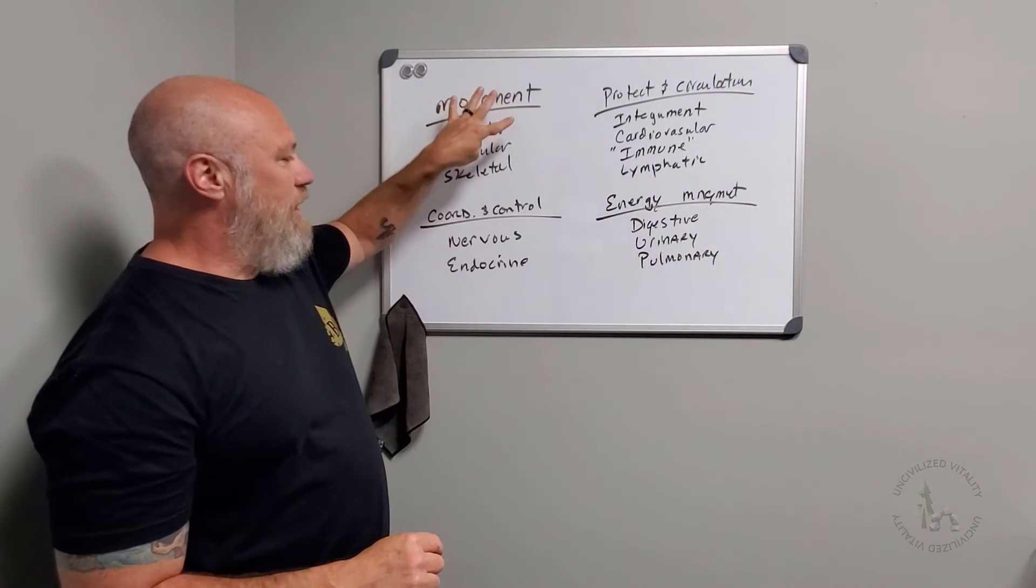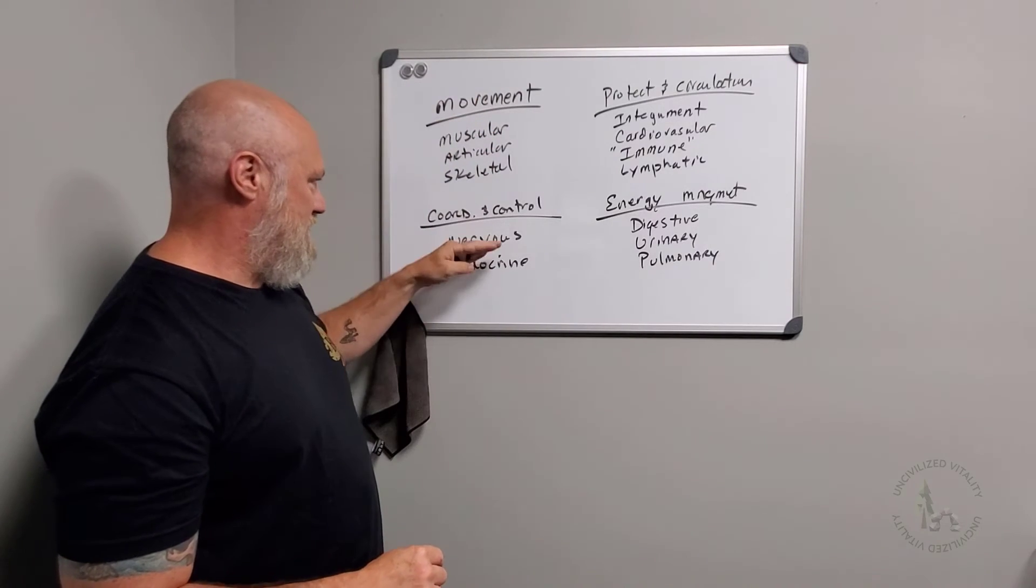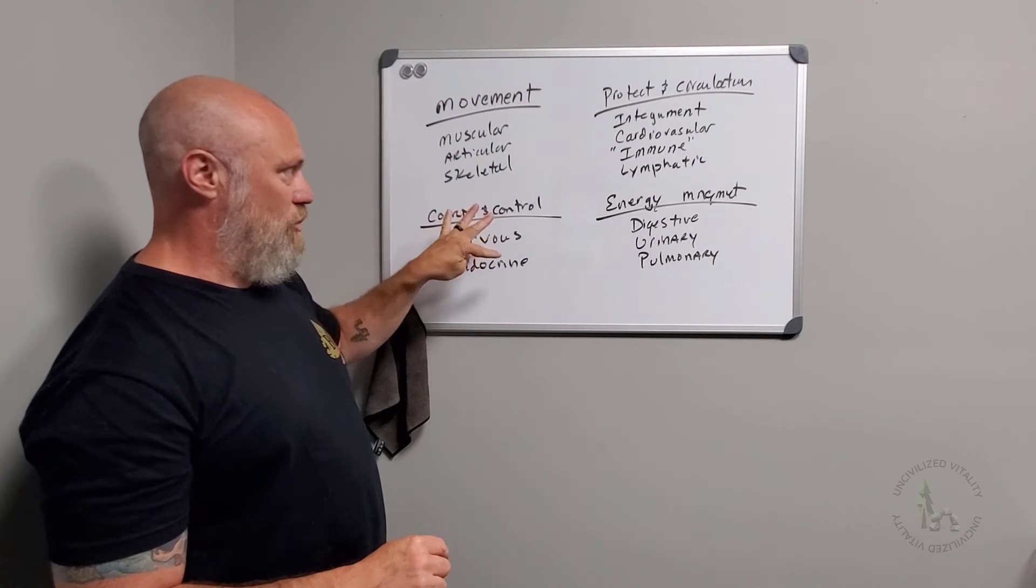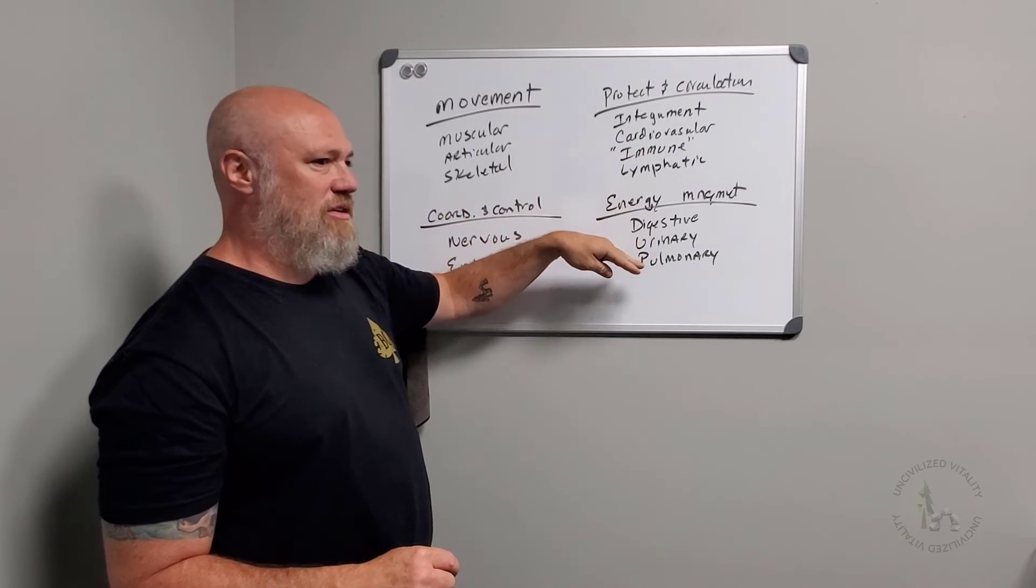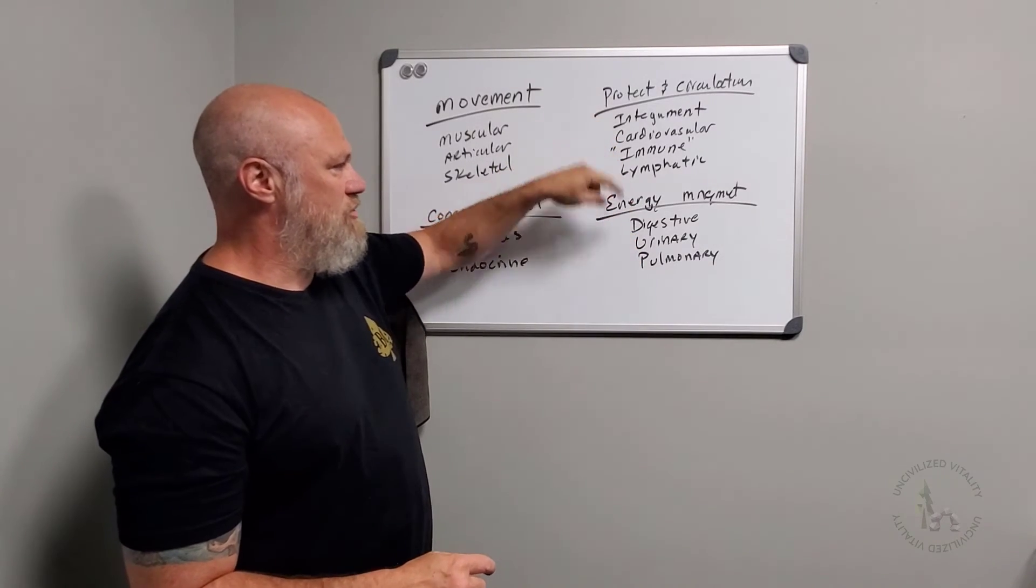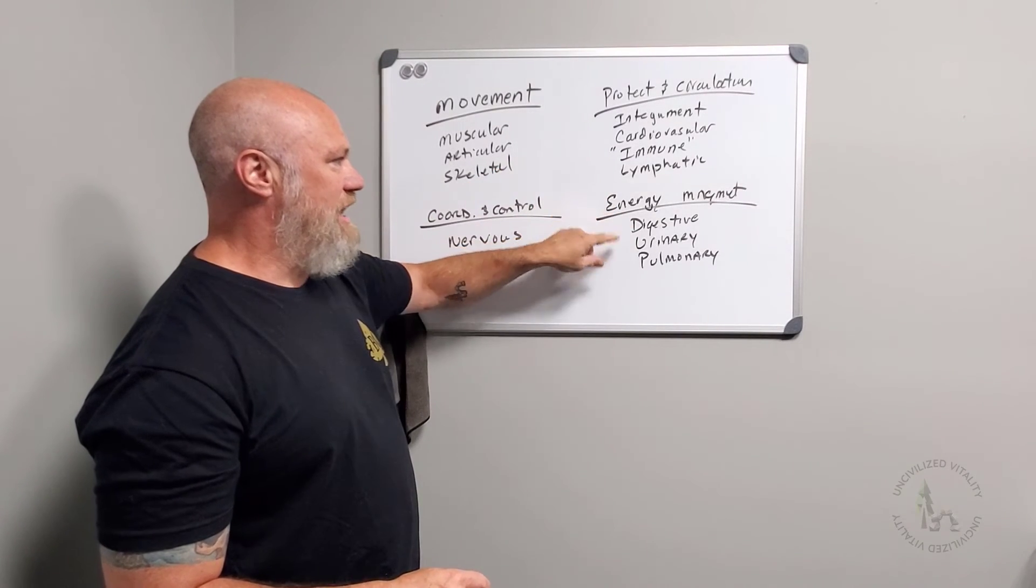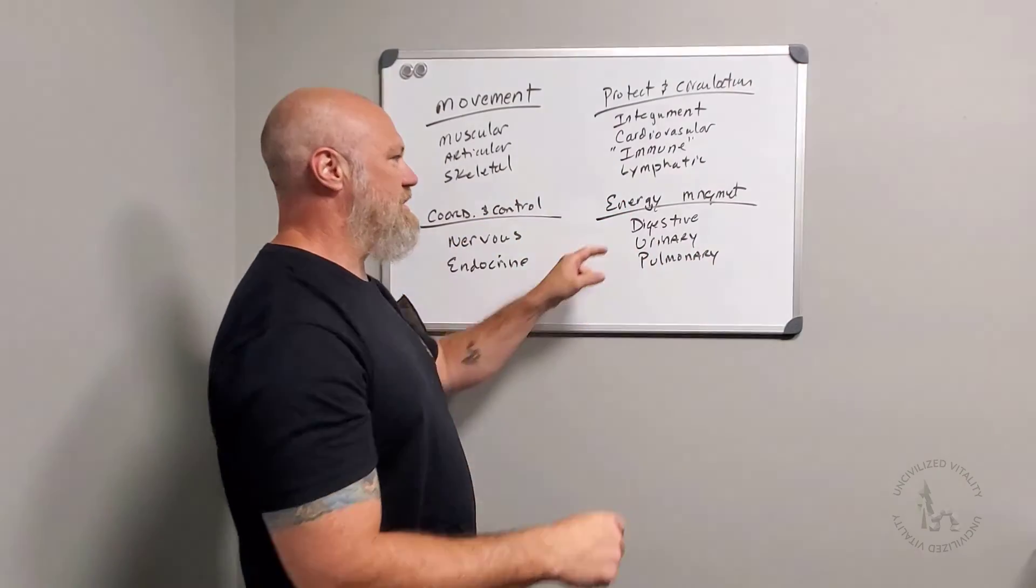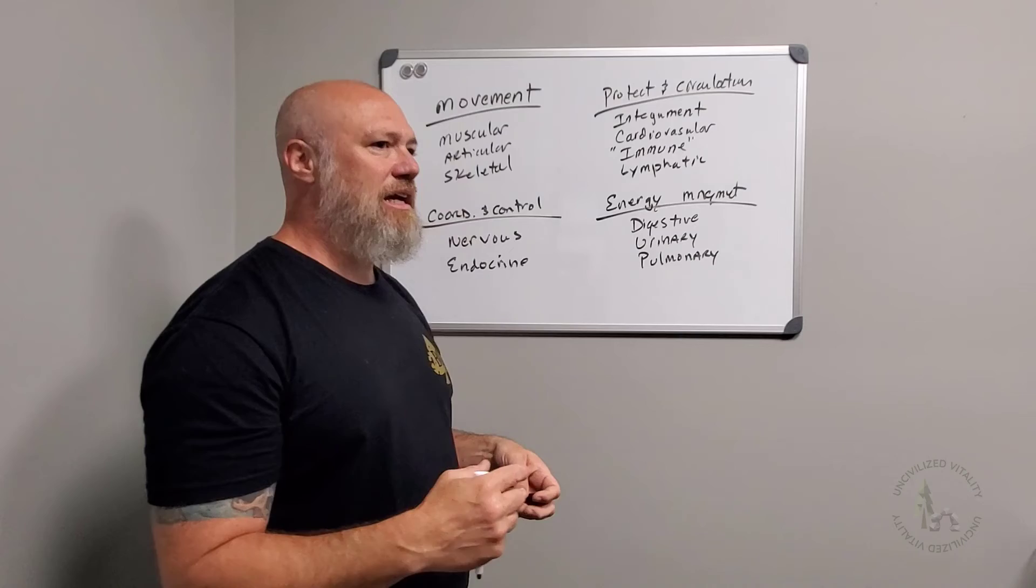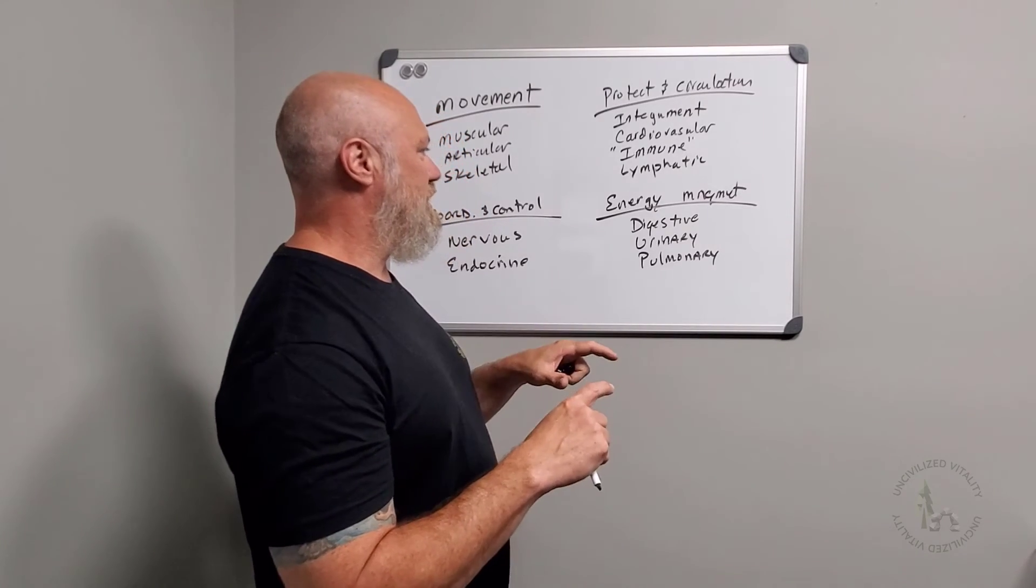So you're going to move around your environment as an organism. These systems kind of contribute directly to that. These systems are going to help you coordinate and control that movement. You're going to need to protect yourself and circulate around, for instance, nutrients that you take in, circulate waste, maintain fluid compartments. You're going to have to manage that energy, taking in nutrients, processing, metabolizing, getting rid of waste. And these three systems are mainly concerned with that aspect of living.